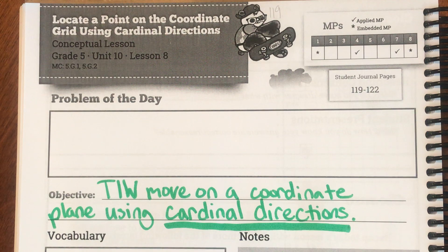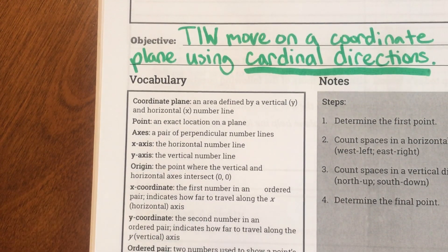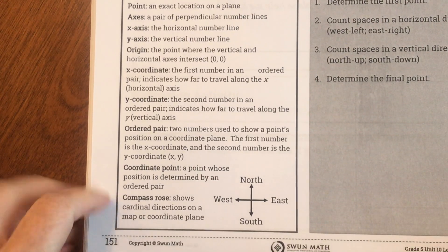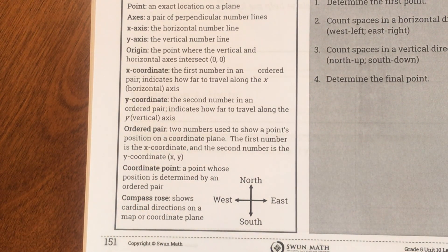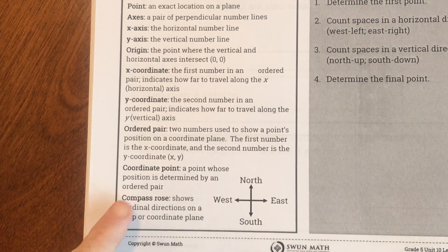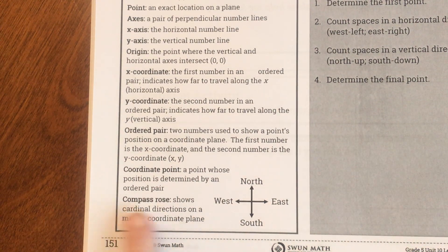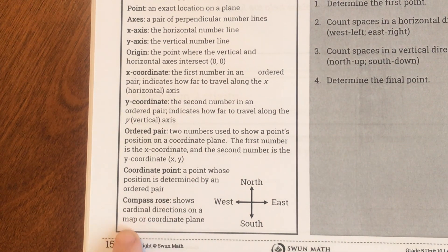Let's look at our vocabulary. We notice a lot of things that we've been practicing, and then when we come all the way down here, we see something new that we haven't seen before — something called a compass rose. Compass rose shows cardinal directions on a map or a coordinate plane.